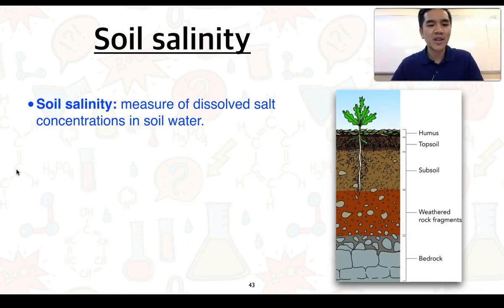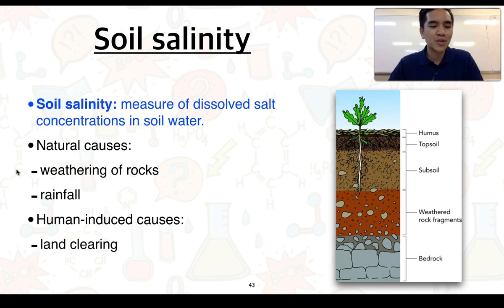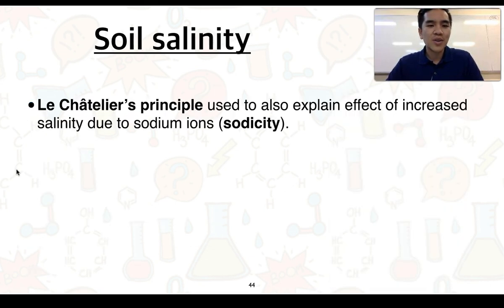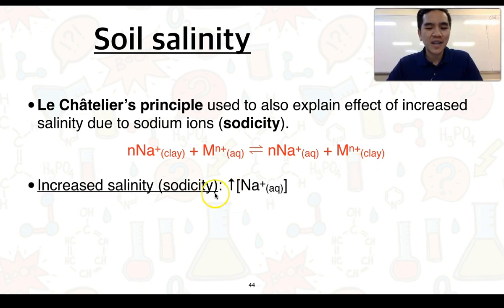As our final consideration, we're going to look at soil salinity. Soil salinity is a measure of dissolved salt concentrations in soil water. It can be caused naturally through weathering of rocks and rainfall, and human-induced through land clearing and irrigation. Like soil acidity, soil salinity can be explained using Le Chatelier's principle. When we're talking about increased sodium ion concentration we refer to this as soil sodicity. An increase in salinity or sodicity increases the concentration of sodium ions in the soil water.